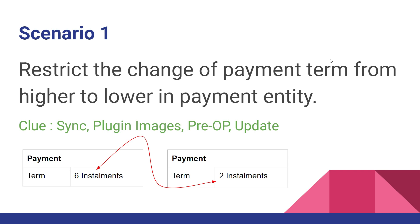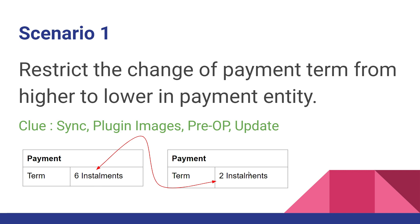For example, you have one table called 'payment' and that table contains a 'term' column. That field contains 'six installments' as a choice and 'two installments' as a choice. Now when the user wants to change from six installments to two installments, that means the term is changing from a higher installment to a lower installment, and you want to restrict that by throwing an exception that you cannot change a higher term to a lower term.